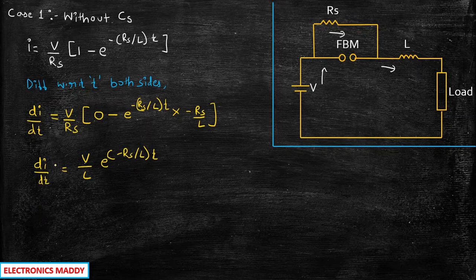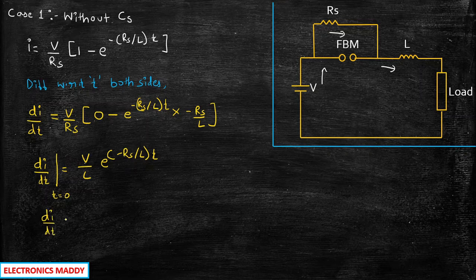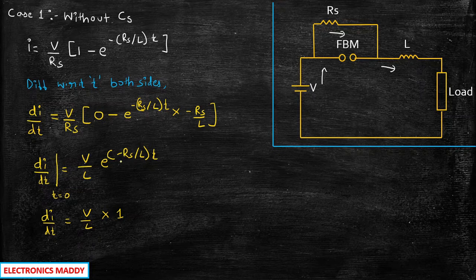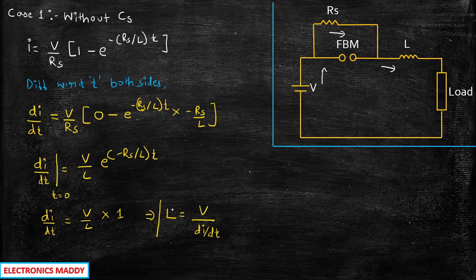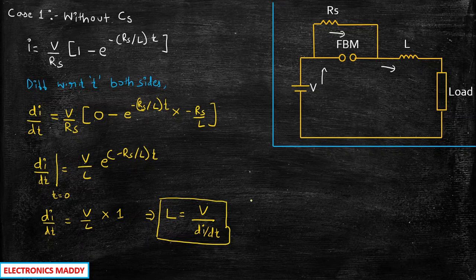Now let us assume that at instant T = 0, we get the maximum value — that is why we consider T = 0. At T = 0, dI/dt = (V/L) × e^0 = V/L × 1 = V/L. Rearranging this equation, we arrive at L = V / (dI/dt). This is a very, very important expression for L.